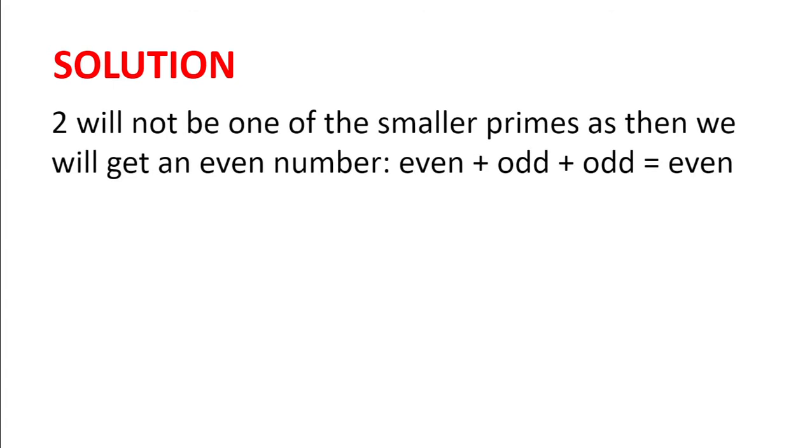Well, two cannot be one of the smaller primes, as then we will get an even number because the remaining primes are odd, and even plus odd plus odd makes even.